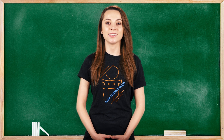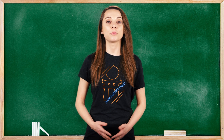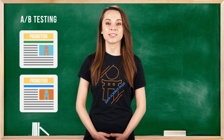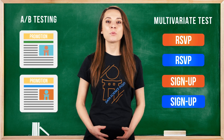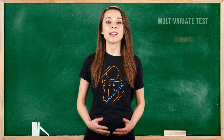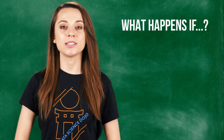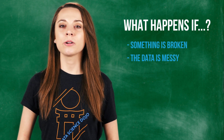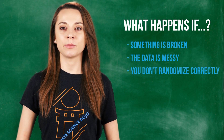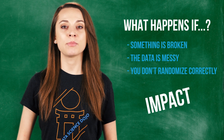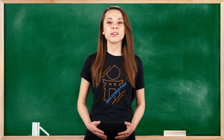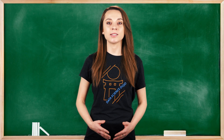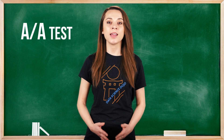Hi and welcome to this quick introduction on AA testing. We've just covered what is an AB test and what is a multivariate test, but what is an AA test? If something is broken, the data is messy, or maybe you don't randomize correctly, this will have an impact on your experiment. You should make sure that your AB test is being conducted properly first by setting up an AA test.